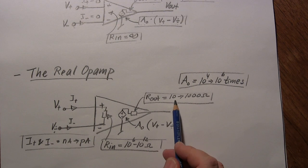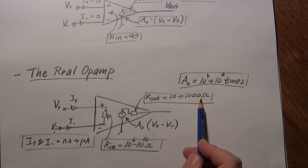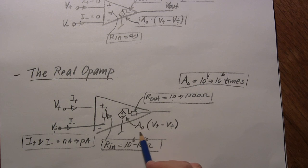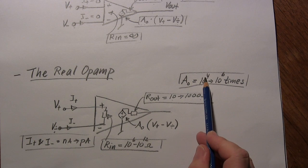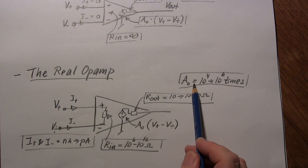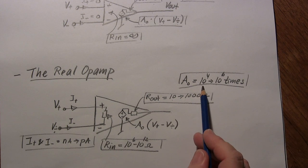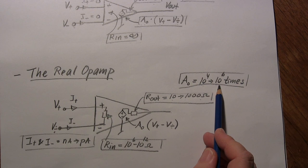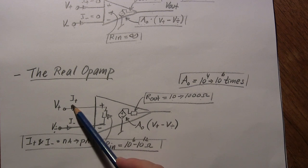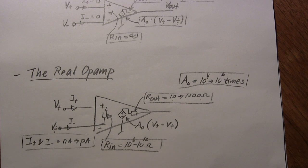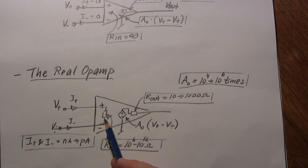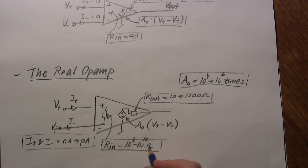For the real op-amp, R_out has a realistic value of 10 ohms to 1 kilohm. The raw gain is in the range of 10⁴ to 10⁶ times, depending on how expensive the op-amp is. There is also a small input current in the nano-amp to pico-amp range, meaning a finite input resistance of about megaohms to gigaohms or even higher. That covers the basics of the op-amp.